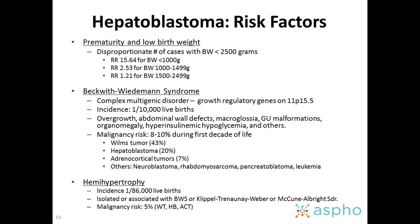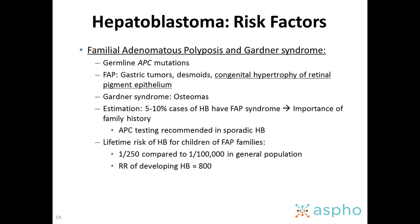Hemihypertrophy is also very rare, presenting in 1 in more than 50,000 live births. It's isolated or associated with Beckwith-Wiedemann syndrome or others, like Klippel-Trénaunay-Weber or McCune-Albright syndromes. The malignancy risk is similar to Beckwith-Wiedemann, around 5%, with the same type of tumors: Wilms, hepatoblastoma, and adrenocortical.